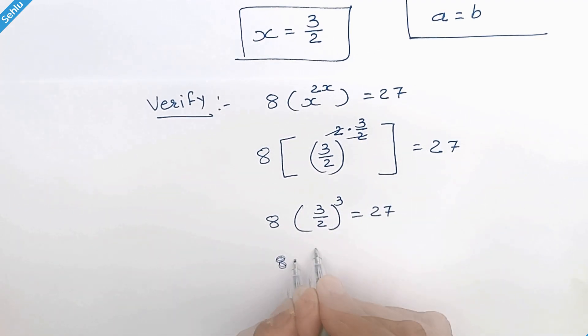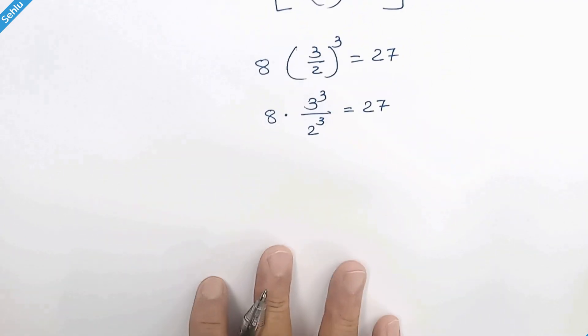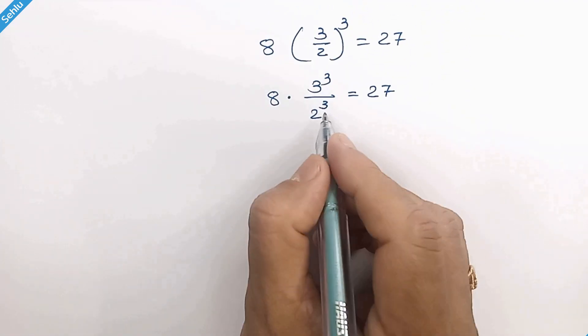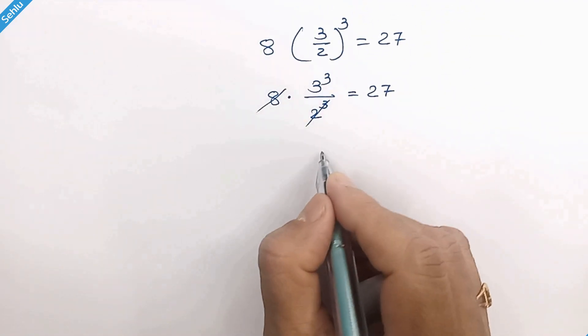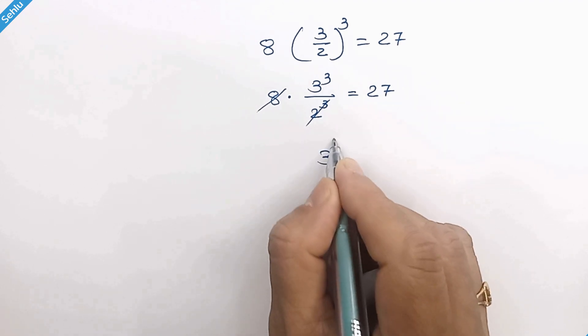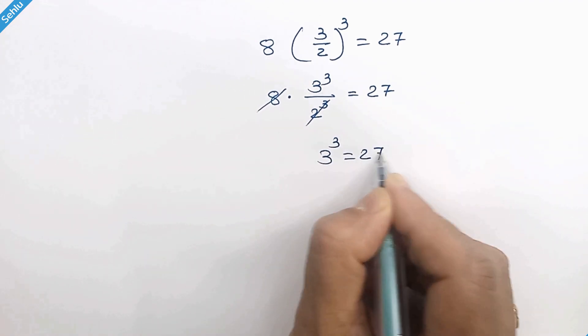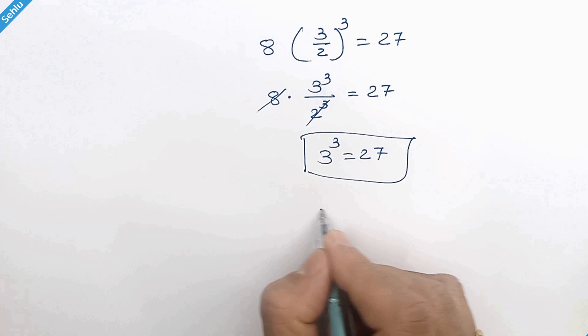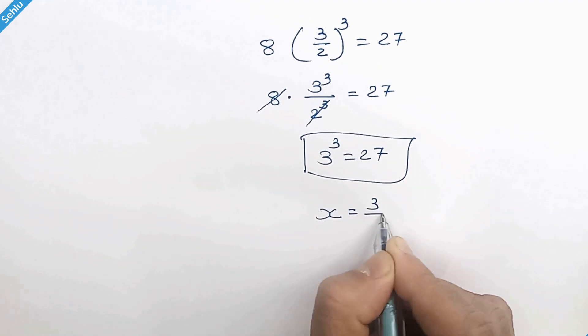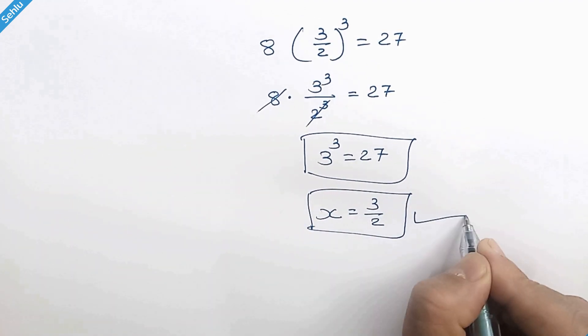So it can be written as 2 cube is 8 so this 2 will be eliminated. Now we have 3 cube is equal to 27. So x is equal to 3 over 2 is the correct answer.